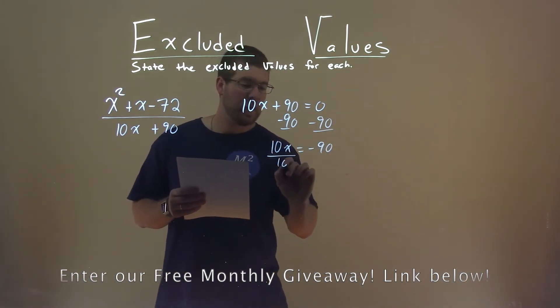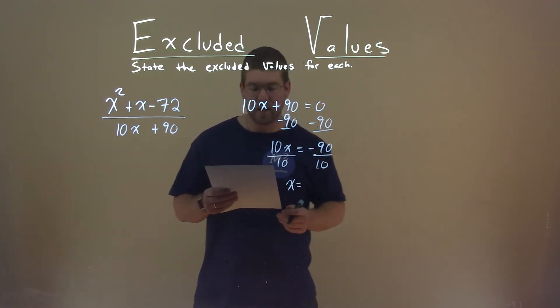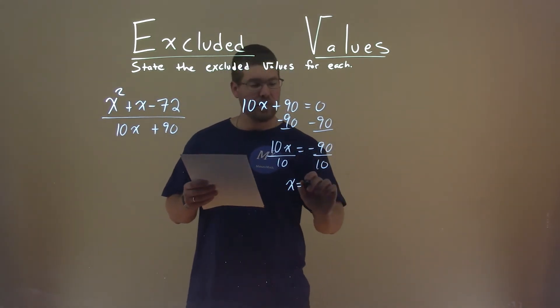Divide both sides by 10, fairly simple. And x equals negative 90 divided by 10, which is negative 9.